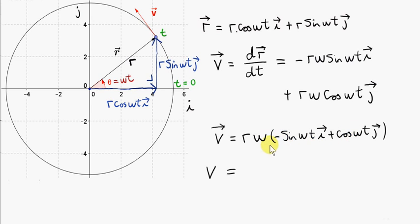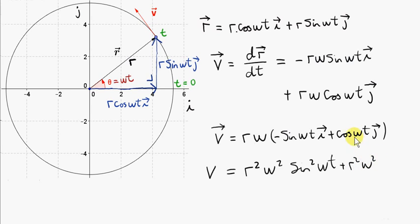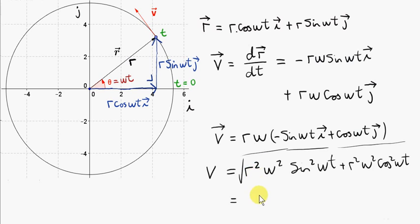To get the magnitude of vector v, we use Pythagoras' theorem: we square both components and sum them. Squaring r omega sine omega t gives r squared omega squared sin squared omega t, and squaring the other component gives r squared omega squared cos squared omega t. Taking the square root, r squared omega squared is common to both terms, so we get the square root of r squared omega squared times the square root of sin squared omega t plus cos squared omega t. That's just r omega times 1, using the identity sin squared theta plus cos squared theta equals 1. So the magnitude of the velocity is r omega, just as we saw in the first video.